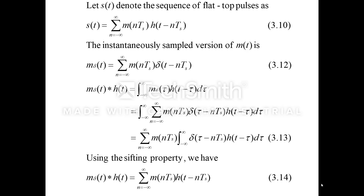If M of T is instantaneously sampled, then it is M delta of T, which we had seen in the last lecture. M delta of T is equal to the summation of M of NTS delta of T minus NTS, where the modulating signal was multiplied with the comb function. So M delta of T is the ideal sampling equation, equal to summation N equal to minus infinity to infinity of M of NTS delta of T minus NTS. And hence M delta of T convolving with H of T gives us the PAM signal.